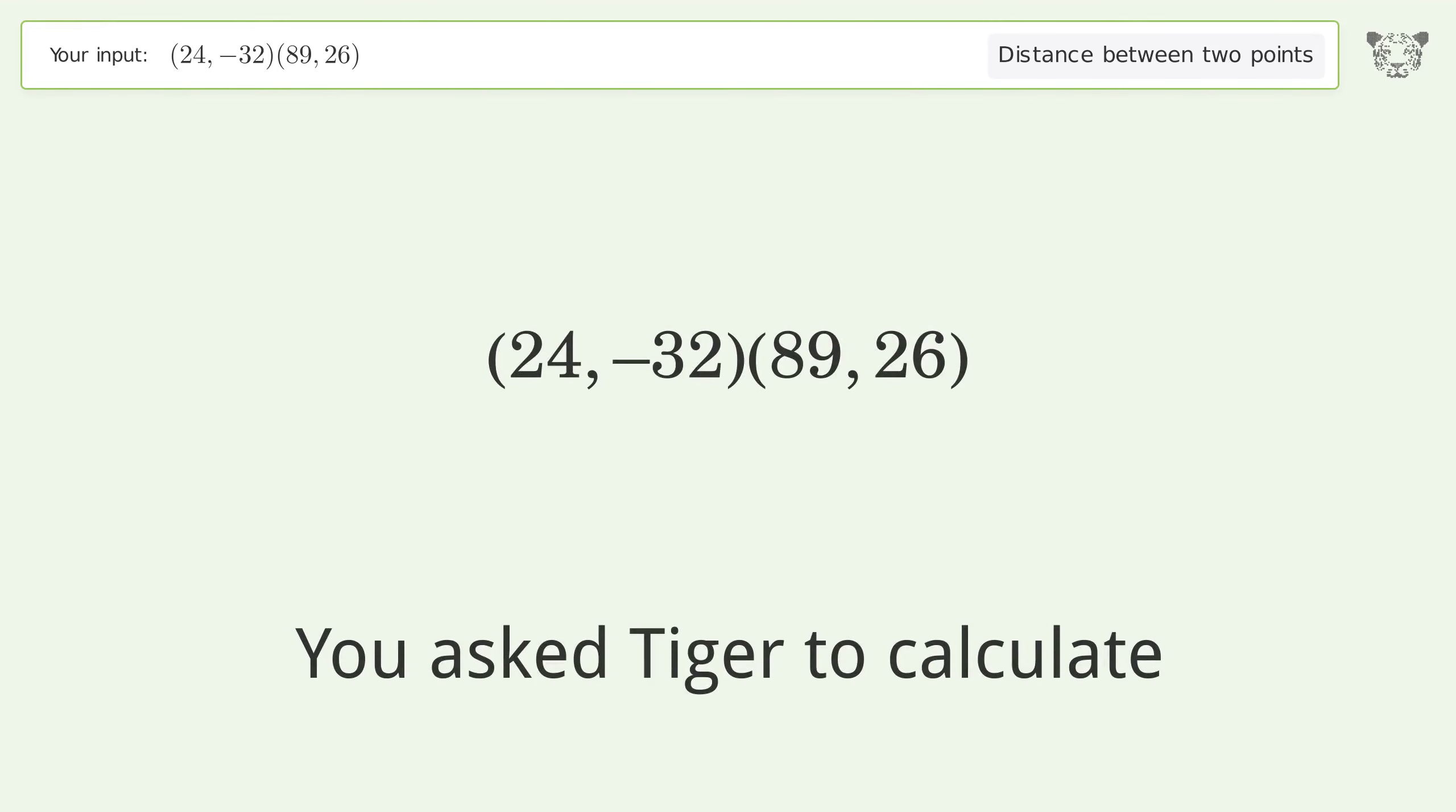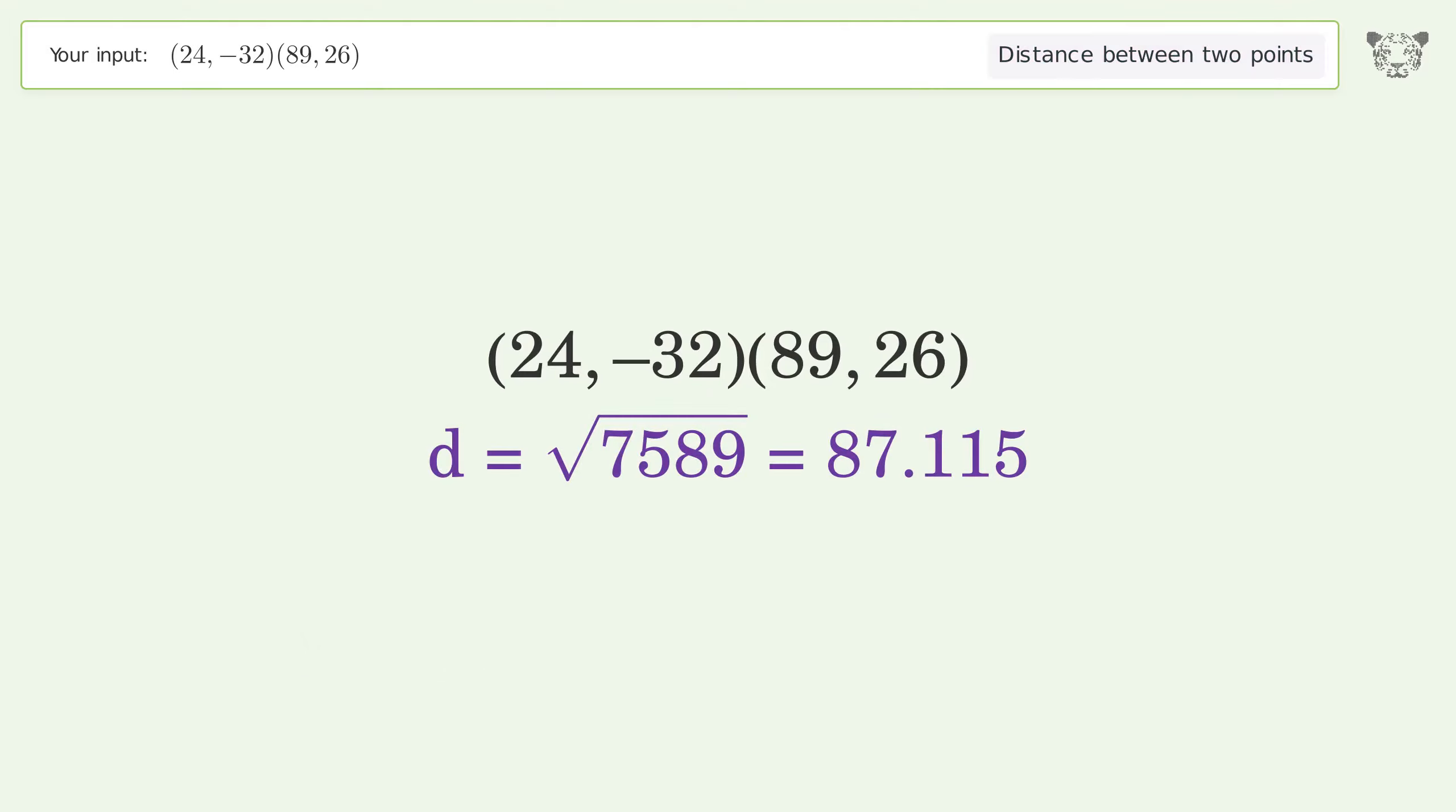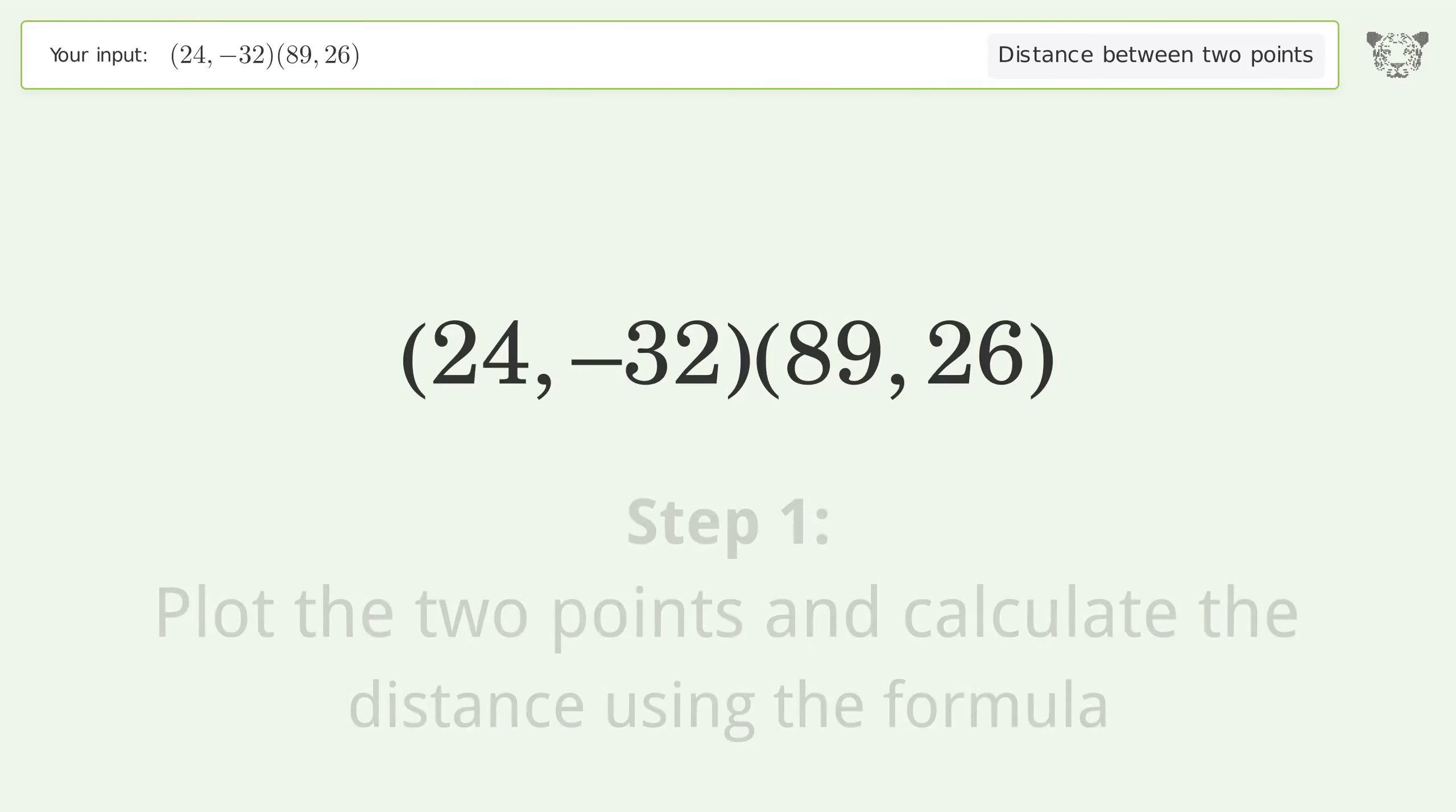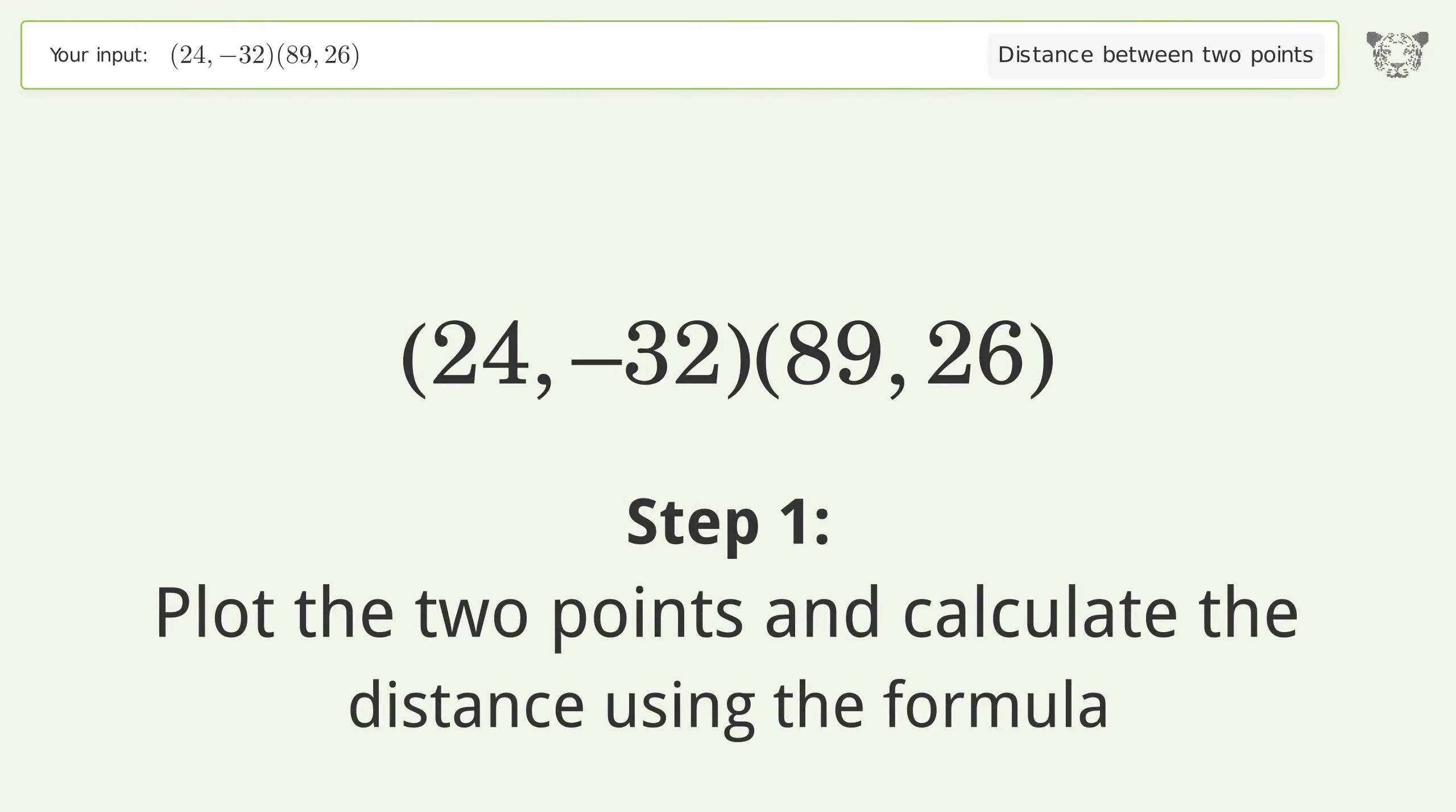You asked Tiger to calculate the distance between two points. The distance between the two points is the square root of 7589 or 87.115. Let's solve it step by step. Plot the two points and calculate the distance using the formula.